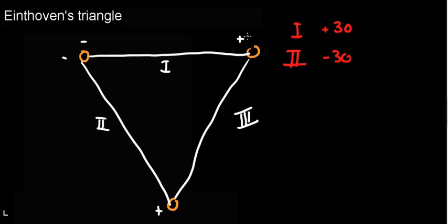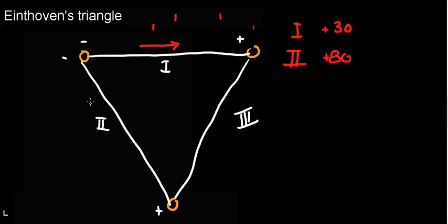Instead of giving different values in current, we can just build vectors from them. Let's say 30 is this length — I can just draw an arrow, a vector here. And let's say lead two reads plus 80 — I'll give it a bigger magnitude and draw that here. This is how we can use a triangle to represent the current measurements between two points.